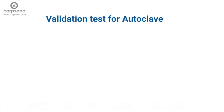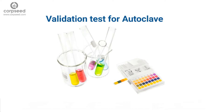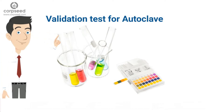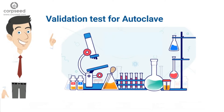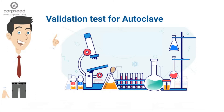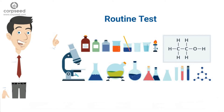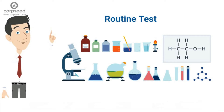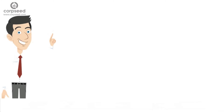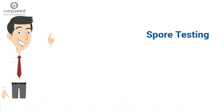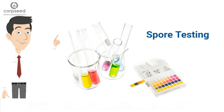Validation test for autoclave: The validation test shall use 4 biological indicator strips — 1 used as a control left at room temperature, and 3 placed in the approximate center of 3 containers with the waste. Personal protective equipment including gloves, face mask and coveralls shall be used when opening containers to place biological indicators. At least one container with a biological indicator should be placed in the most difficult location for steam to penetrate — generally the bottom center of the waste pile. Routine test: a chemical indicator strip or tape that changes color at a certain temperature can verify that temperature has been achieved. Spore testing: the autoclave should completely and consistently kill the approved biological indicator at the maximum design capacity.